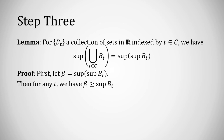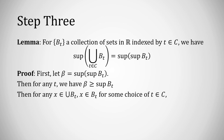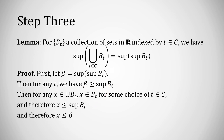Since beta is the supremum of the supremums, beta is an upper bound of the supremums, meaning any individual supremum is less than or equal to beta. For any x in the grand union, x belongs to one of the B_t's, so x is less than or equal to one of the supremums, which in turn is less than or equal to beta. Therefore any x in the union is less than or equal to beta, so beta is an upper bound of the grand union.